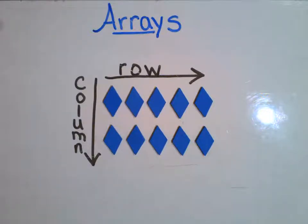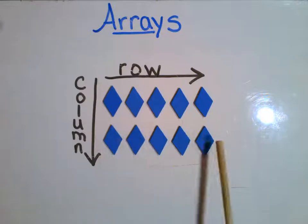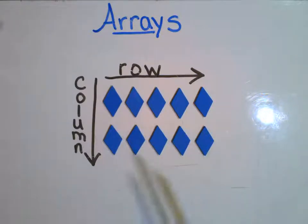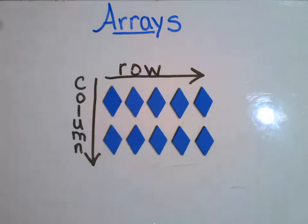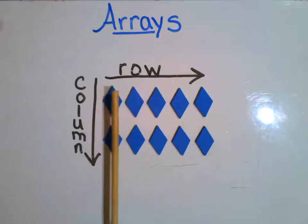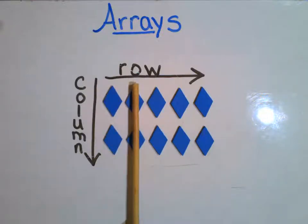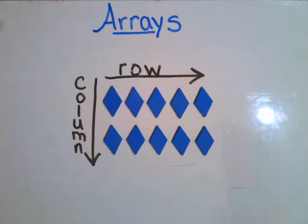So we're going to do two kinds of repeated addition here. The first one, we are going to be focusing on adding by the rows. My rows again go across. I have two rows. Then we're going to be doing repeated addition another way, focusing on the columns. I have one, two, three, four, five columns. So it's very dependent on how many rows you have versus how many columns you have — that's going to determine the number that you are adding repeatedly.